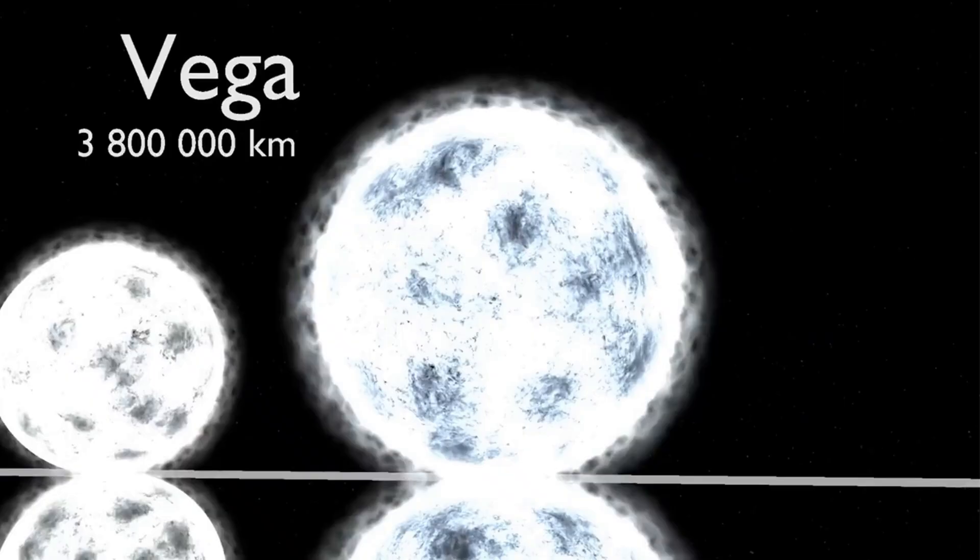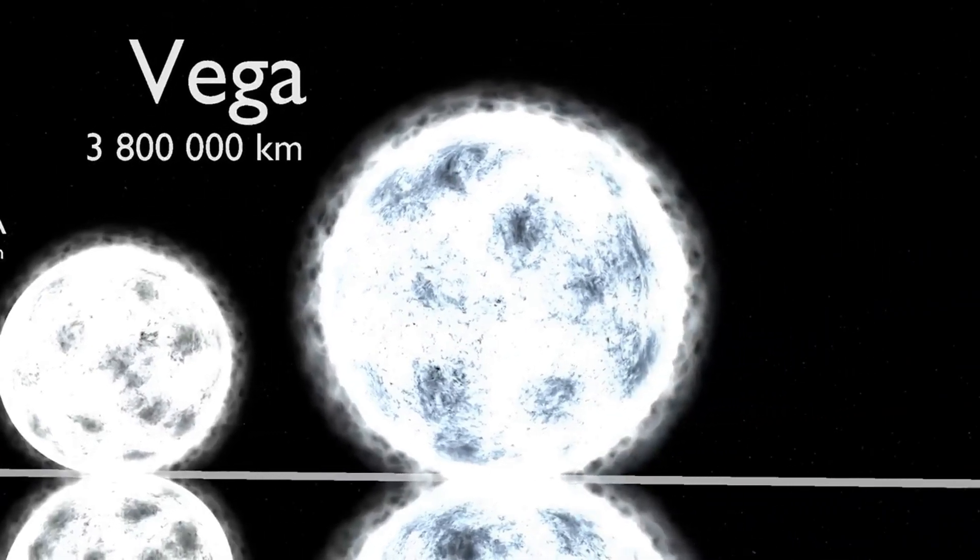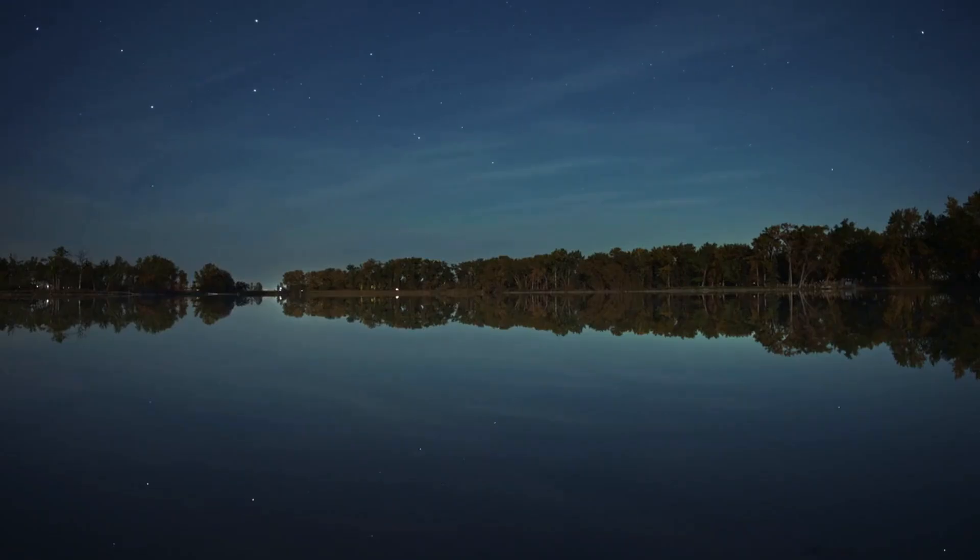Next up, we're moving on to Vega. Vega has a diameter that's 2.7 times larger than the sun, and its mass is 2.1 times that of the sun. There's a formula for a star's lifespan. If a star's mass is 3 times larger than the sun, its lifespan is reduced by 750 times.